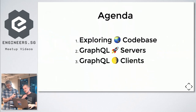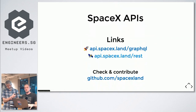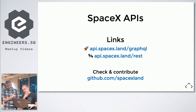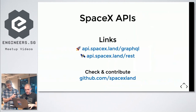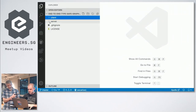So we are going to start with the live coding. We are going to first explore the codebase, get a GraphQL server with TypeScript, and do the same with the client. We are going to be using the SpaceX GraphQL API — all the code is open-source and you can check how I implemented it. Now I'm going to open my IDE and we are going to go to the server side.